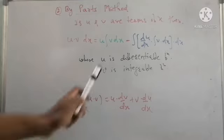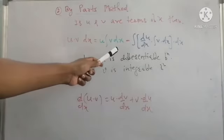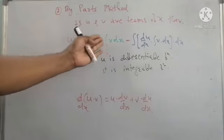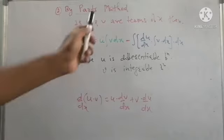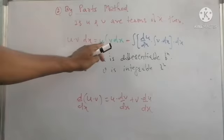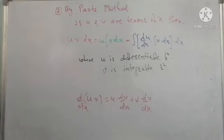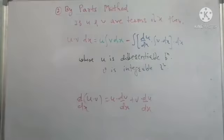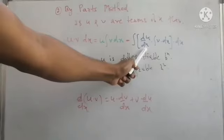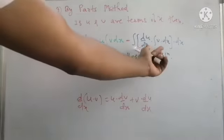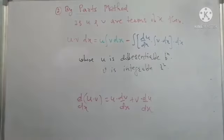In integration, we have a method called integration by parts. In this method, the integral is split into two parts: the first part takes the first term outside the integration and integrates only the second term — that is, u times the integral of v dx. The second part involves the integral of the product of the derivative of the first term and the integral of the second term, v, integrated again with respect to x.